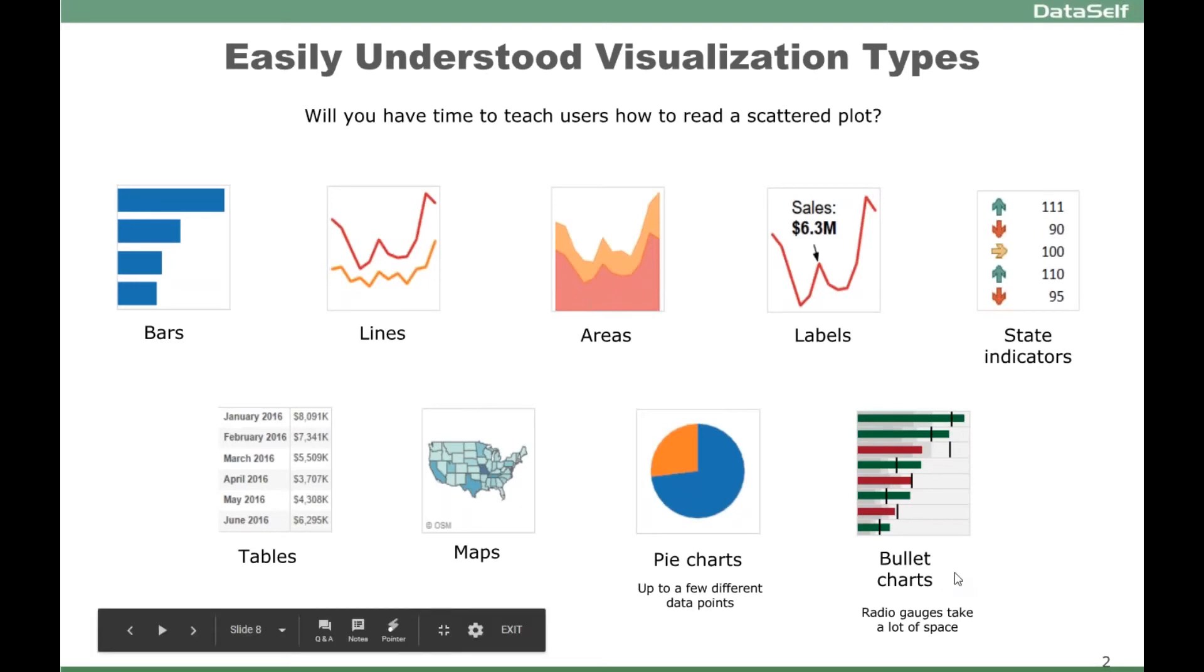Bullet charts are great representations to show things like budgets and actuals. Radio gadgets are not very good because they take too much space.